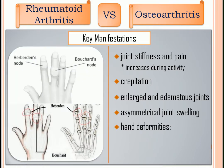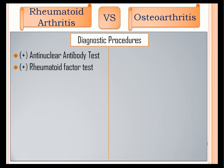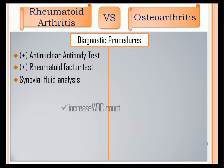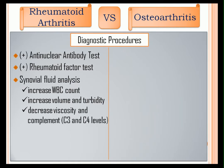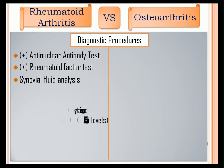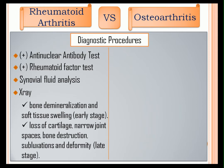Hand deformities or bony bumps. Diagnostic procedures under rheumatoid arthritis: a positive anti-nuclear antibody test, a positive rheumatoid factor test, and synovial fluid analysis which will show an increased WBC count, increased volume and turbidity, and decreased viscosity and complement. On X-ray, early stage will show bone demineralization and soft tissue swelling, while later stage will show loss of cartilage, narrow joint spaces, bone destruction, subluxations, and deformities.